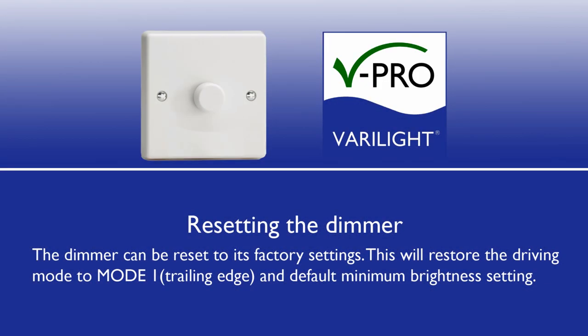How to reset the dimmer. The dimmer can be reset to its factory settings. This will restore the driving mode to mode 1 trailing edge and the default minimum brightness setting.